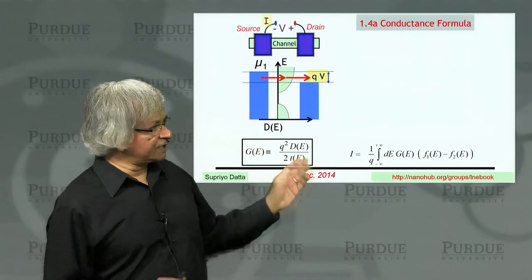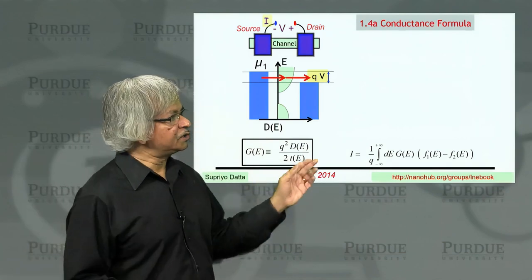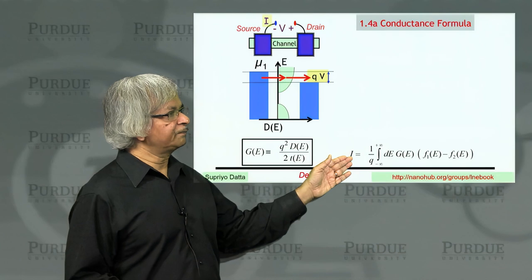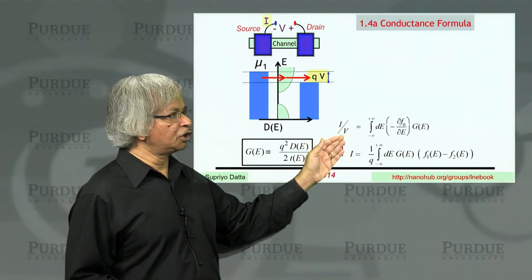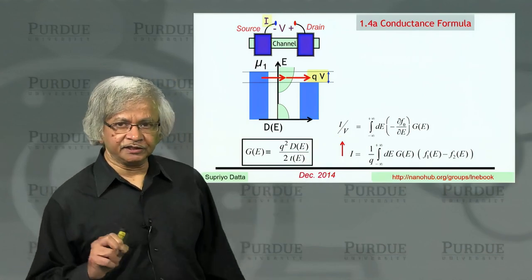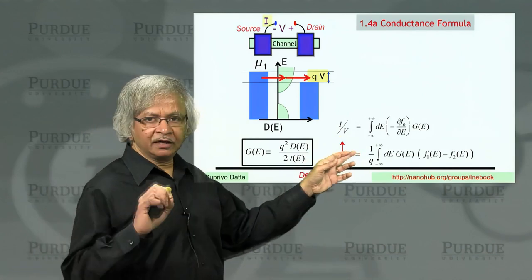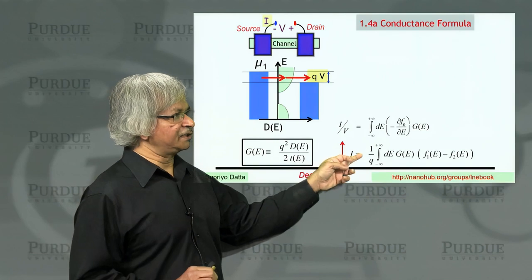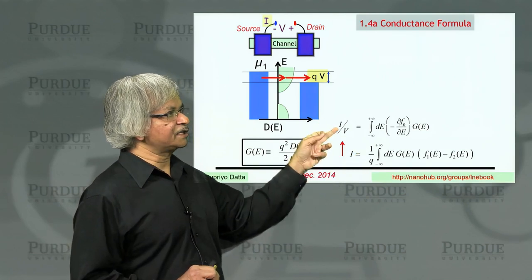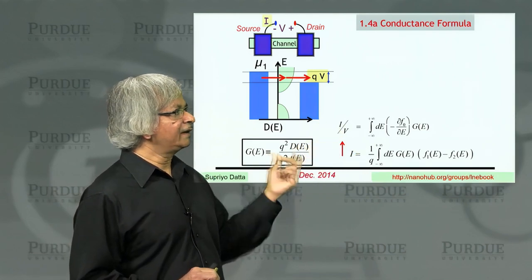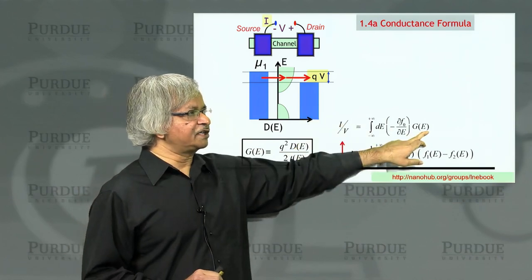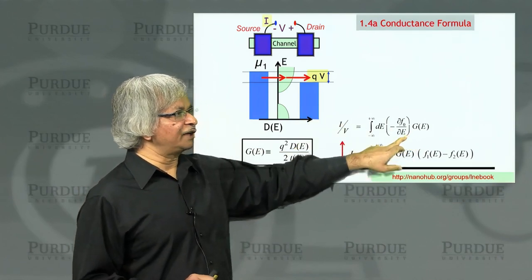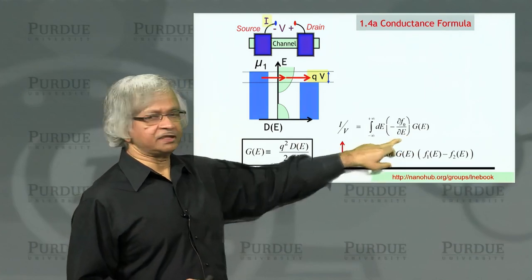Now what we'll do in this lecture is obtain an expression for the conductance—that is, this current divided by voltage. What we'll show is that for low voltages, you can do a little approximate expansion here and get this expression for conductance, where the overall conductance is like this conductance function but averaged over energy according to this relation.